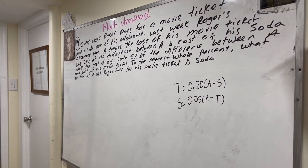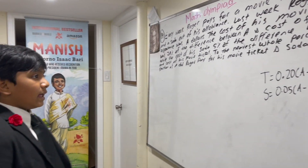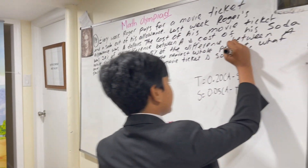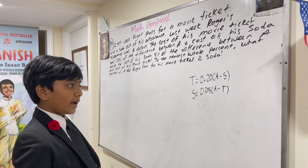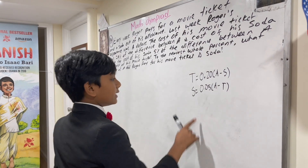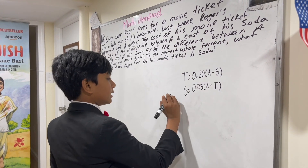To the nearest whole percent, what fraction of A did Roger pay for his ticket and soda? This is pretty straightforward — let's just plug S into T.